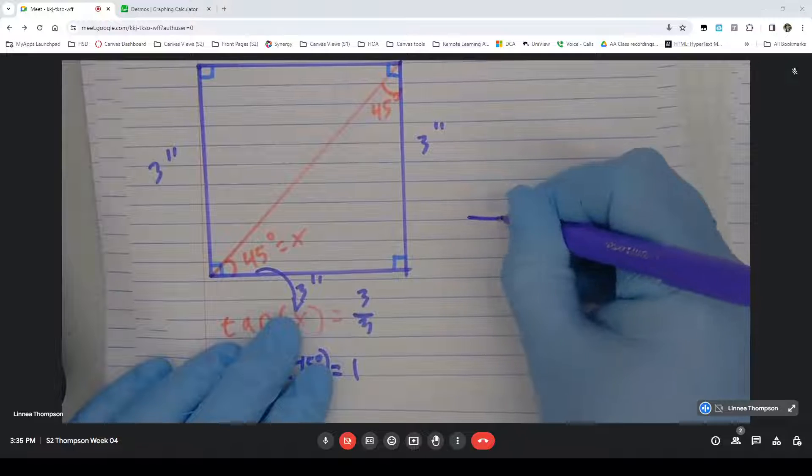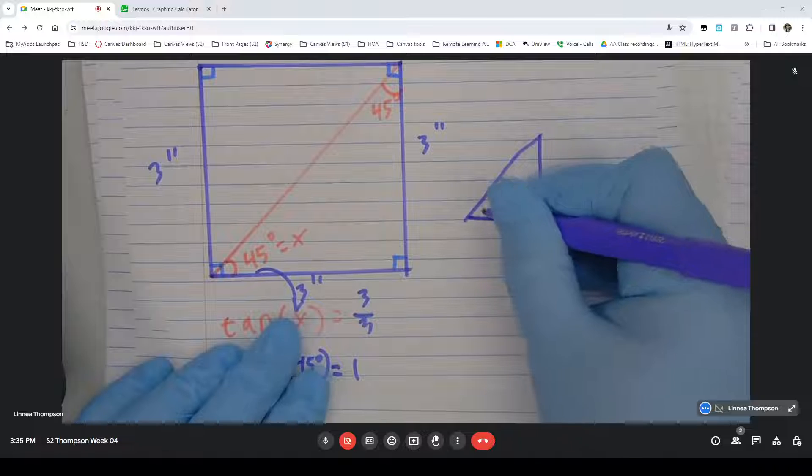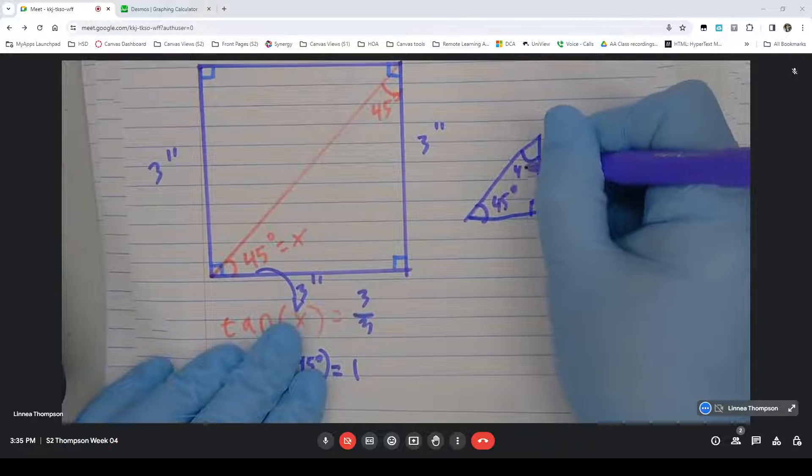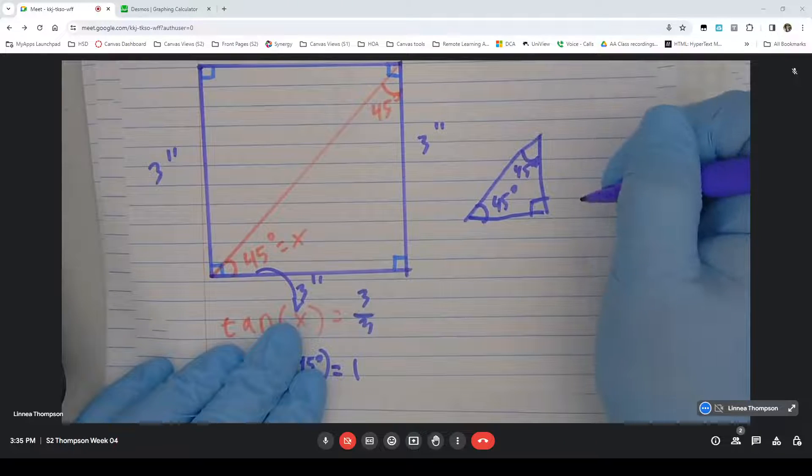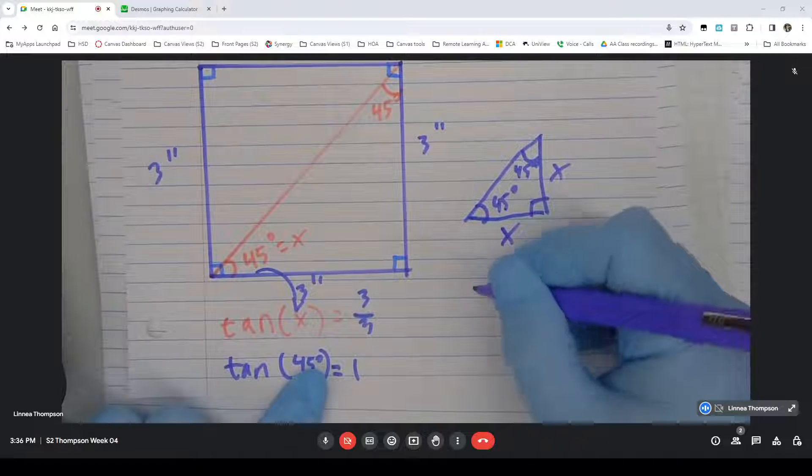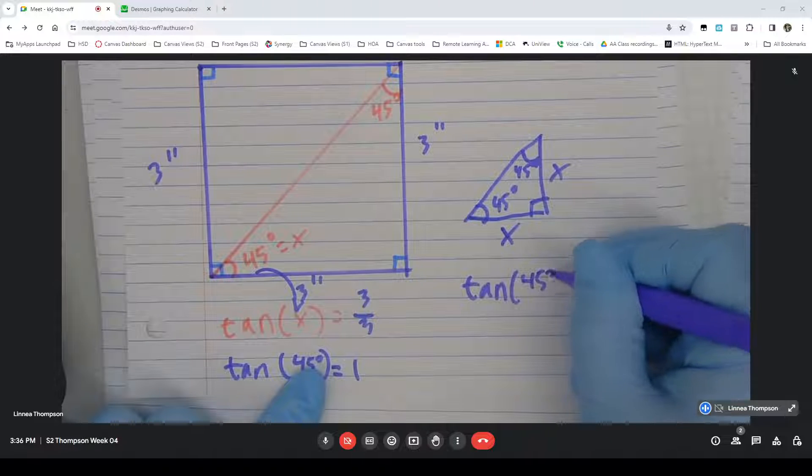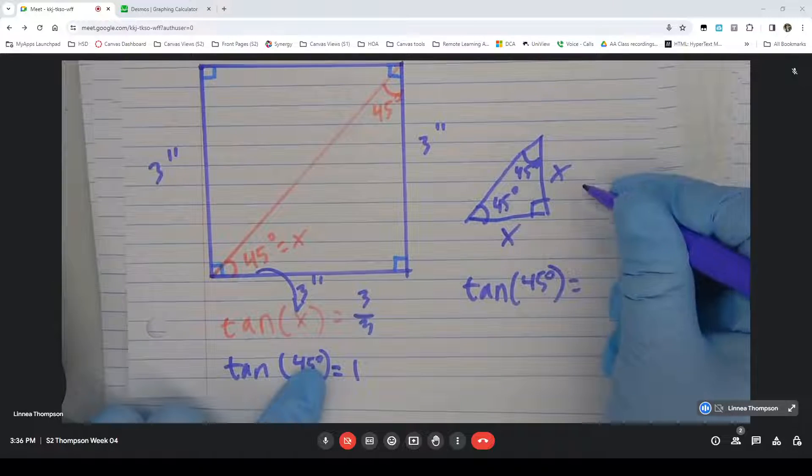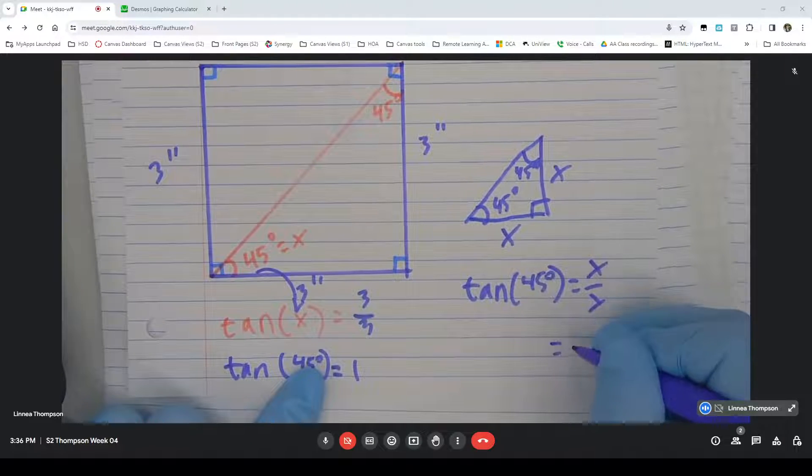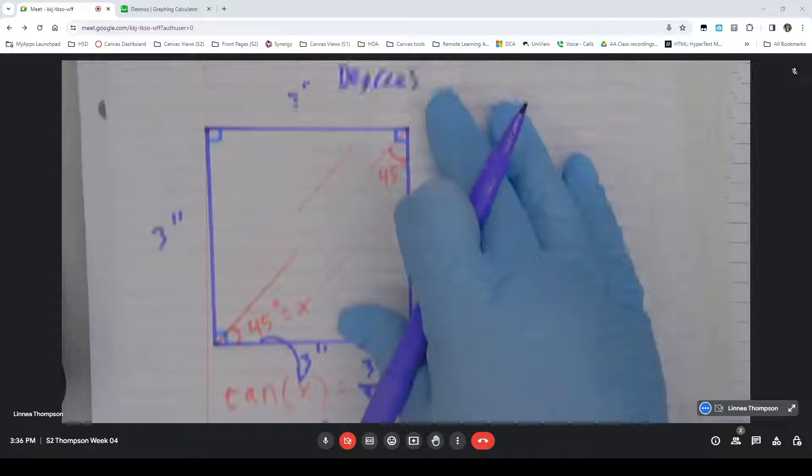these 45 degree angles will always have a tangent of 1, because tangent of 45 degrees would be the opposite over the adjacent. There's my opposite. There's my adjacent. x divided by x would be 1.